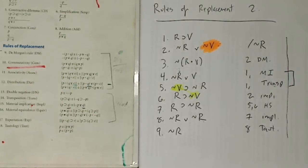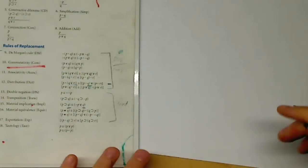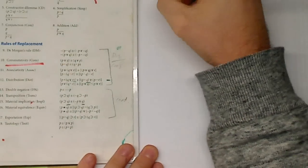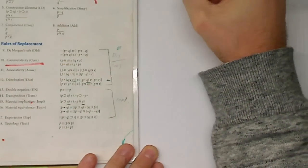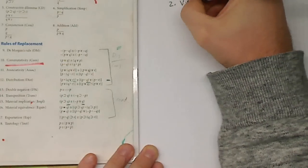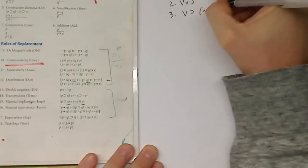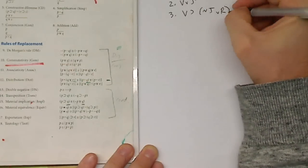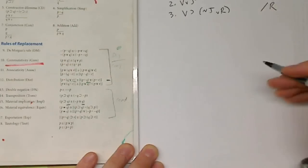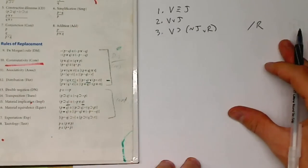Let me do one more problem from rules of replacement two. In this next problem: line one is V↔J, line two is V∨J, line three is V→(¬J∨R), and the conclusion we're looking for here is R. Let me keep the rules here so you can look at them as we go.